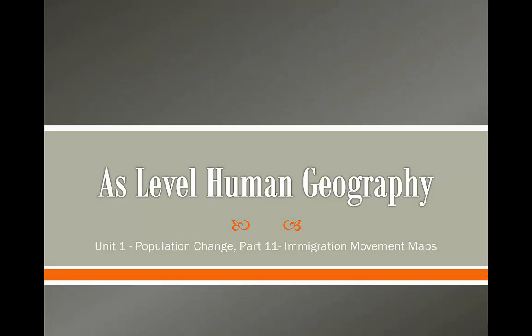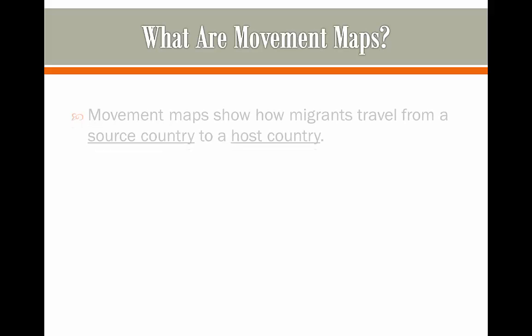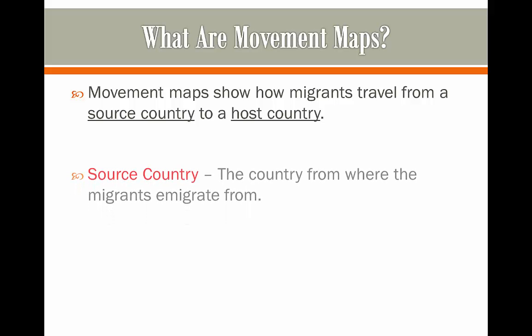Hello students and welcome to the next lesson in our AS level human geography course. Today we're going to be looking at immigration movement maps. These are maps that show how migrants are going to be traveling from a source country to a host country.